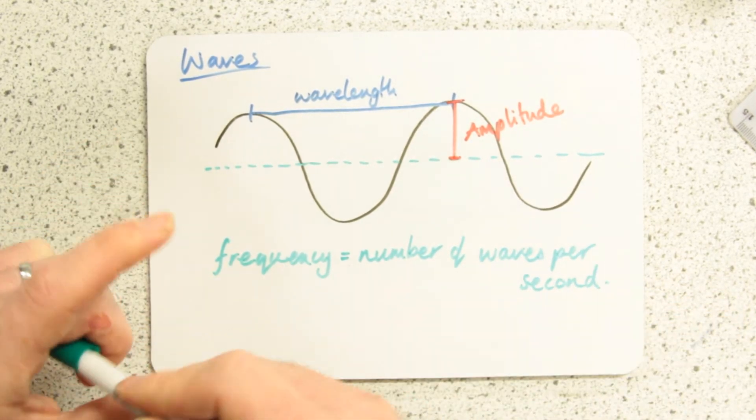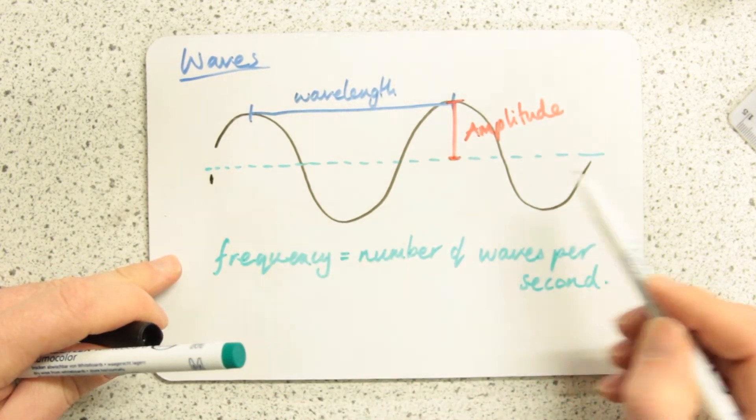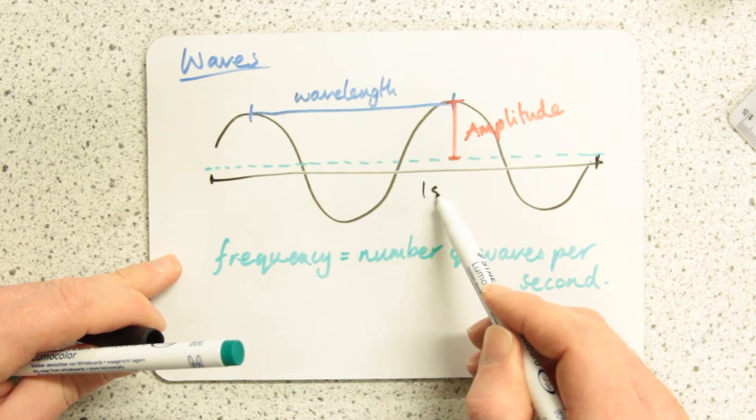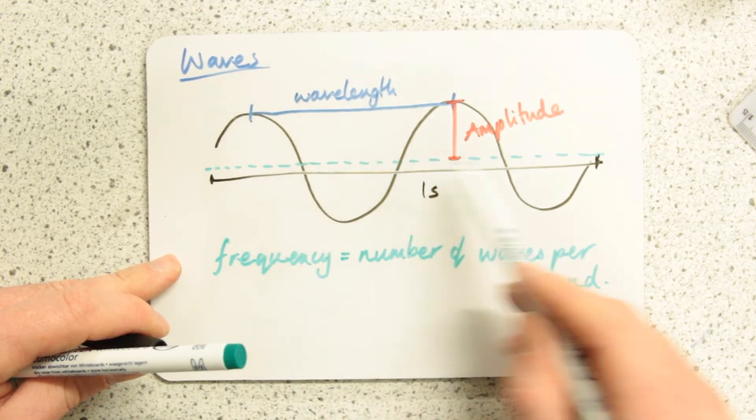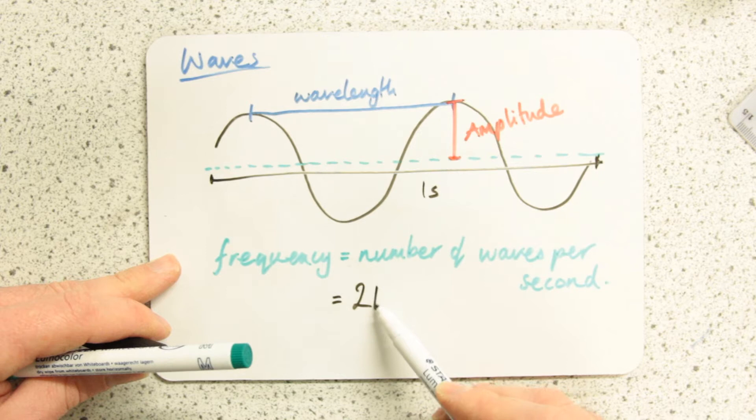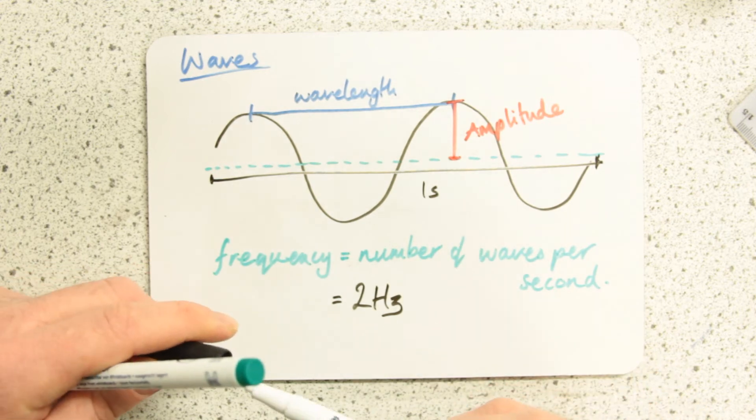So what that means is if I had a time, if it took one second between here and here, then I would have two full waves in that one second. So I would have two waves per second. And we use the unit hertz, hz. So the frequency would be two hertz.